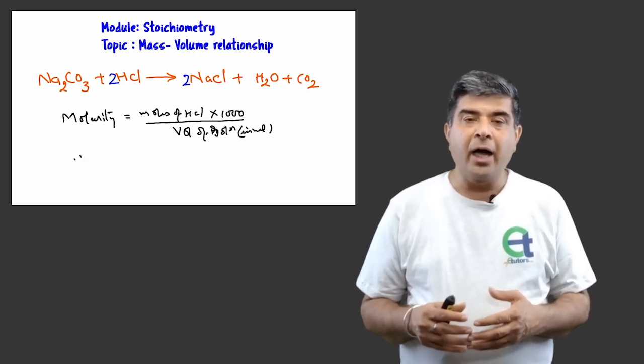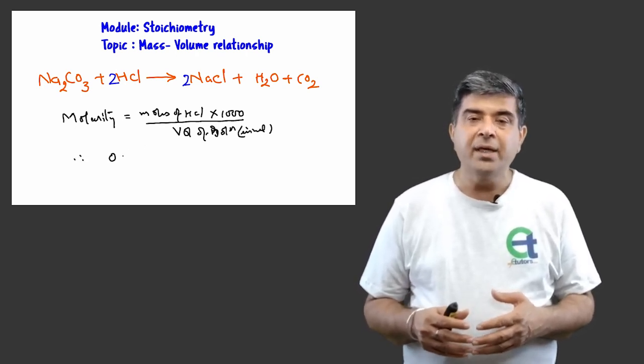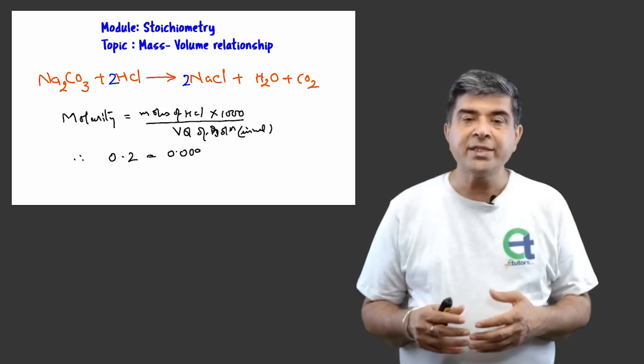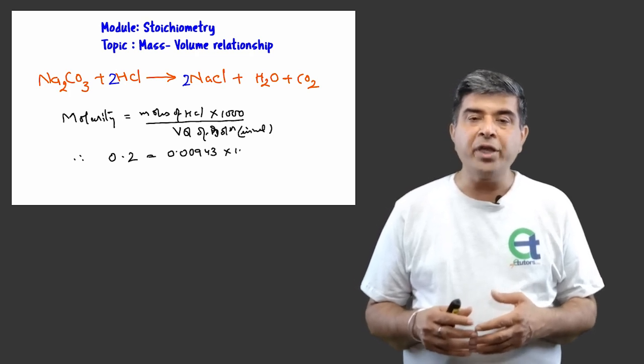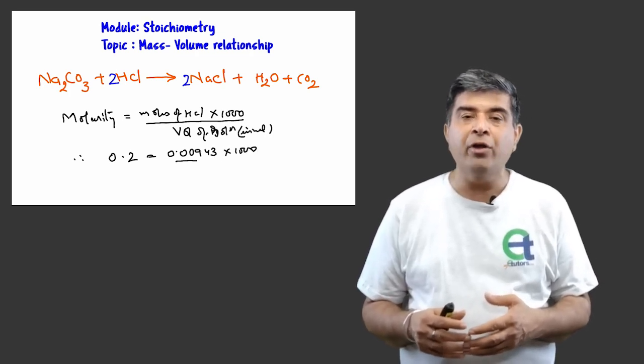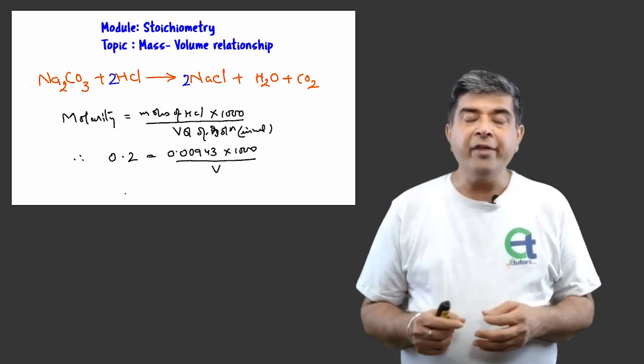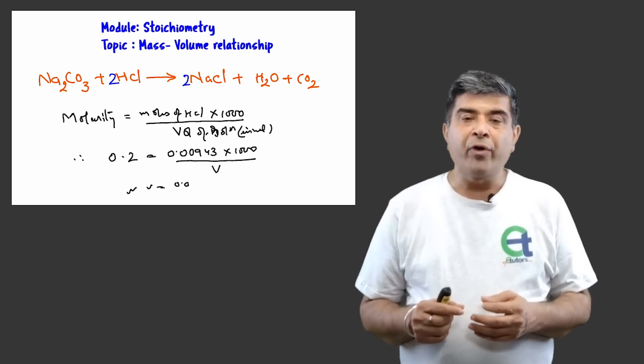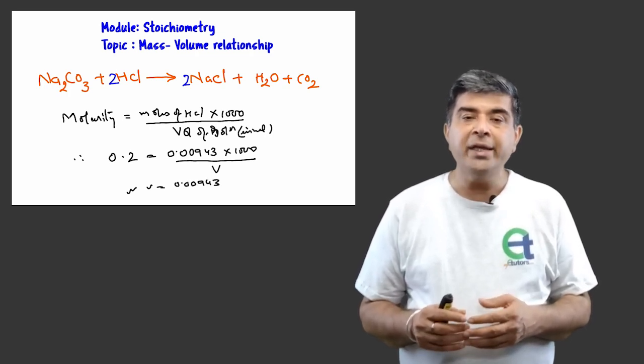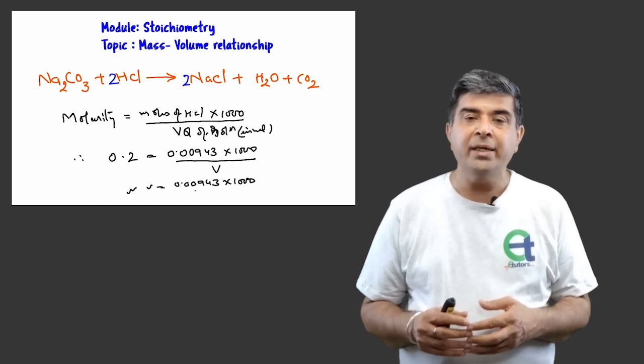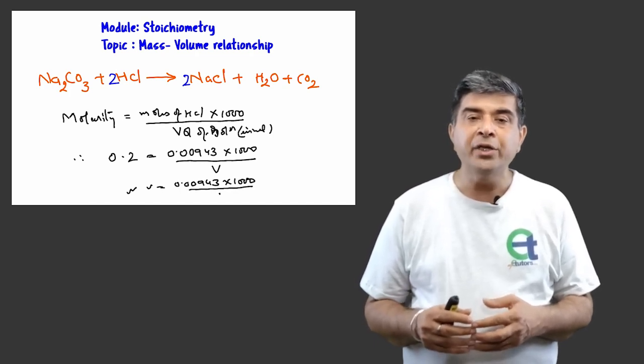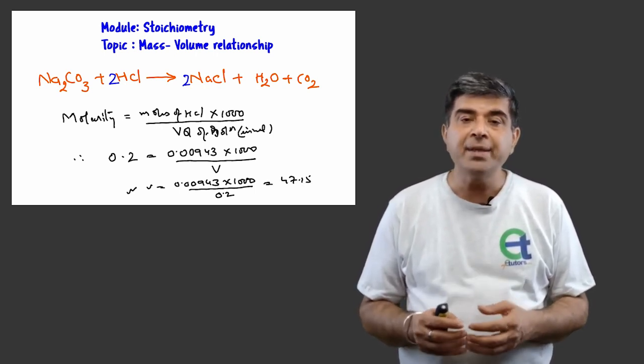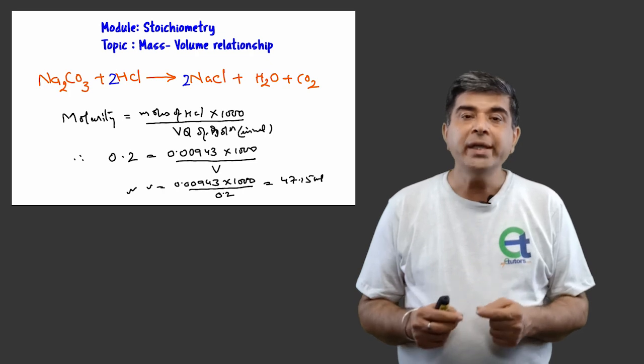Eventually, we know molarity and moles of hydrochloric acid, and volume is unknown. So just by shuffling the terms, we can calculate volume of hydrochloric acid. And solving this equation, we get 47.15 milliliters of hydrochloric acid. Hence, 0.5 grams of sodium carbonate requires 47.15 milliliters of 0.2 molar hydrochloric acid for complete neutralization.